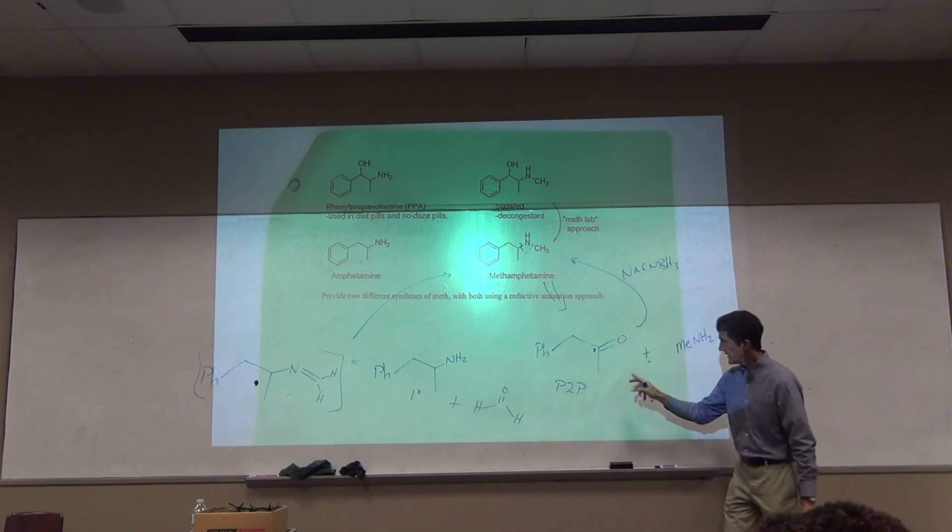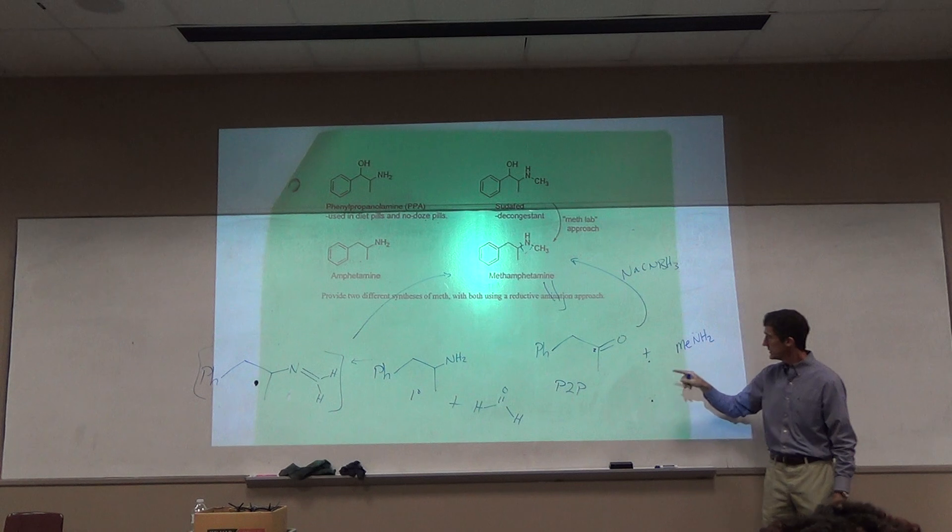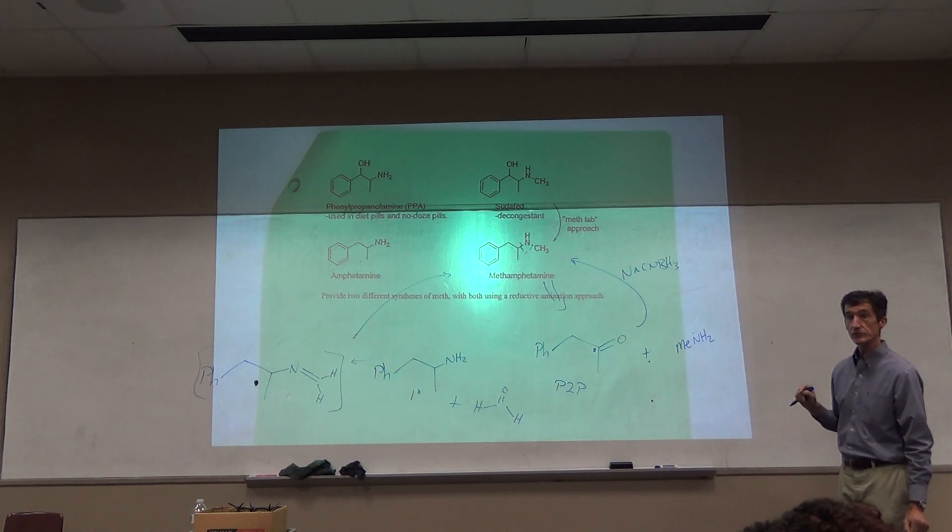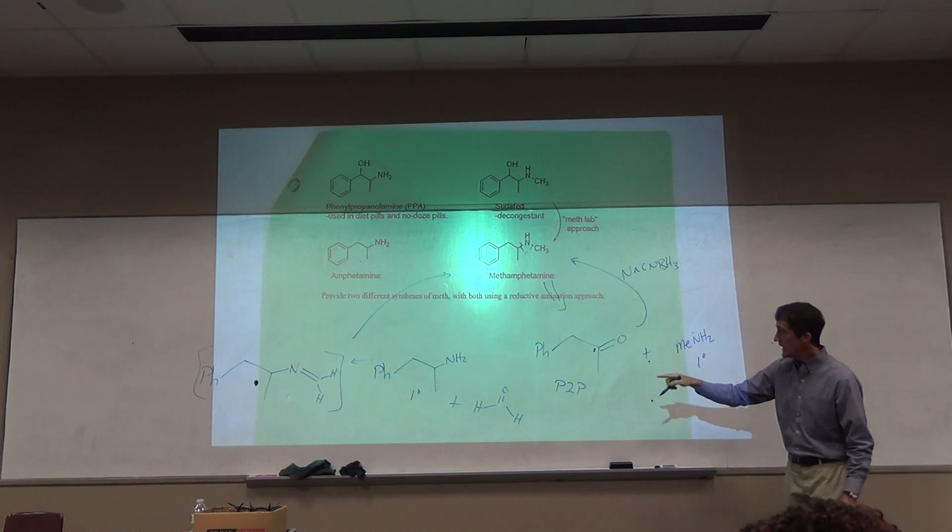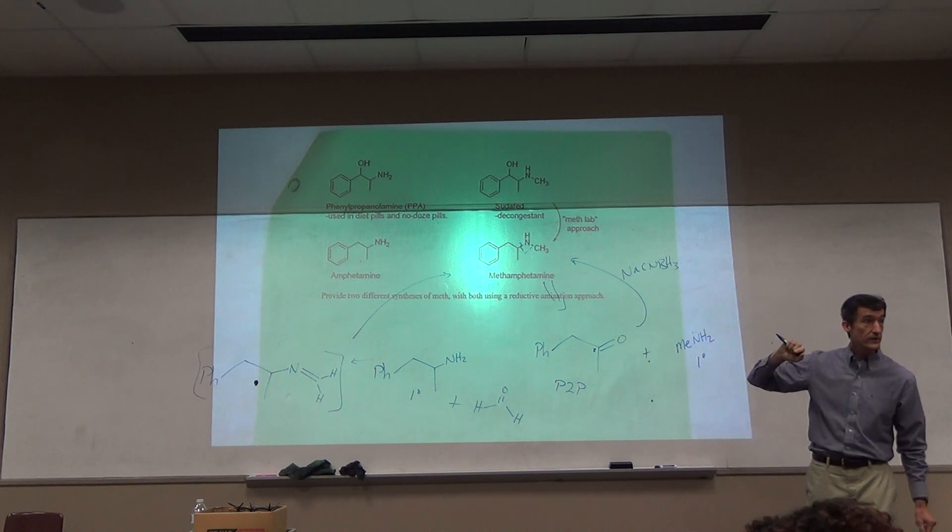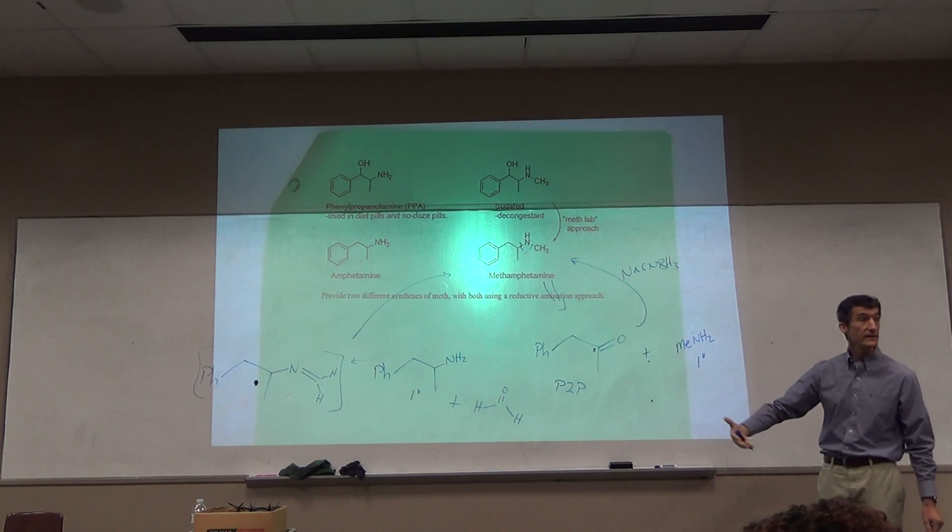Or the P2P method approach, the ketone using just methyl amine as the starting amine. Of course, this is also primary, too. And in both cases, the primary amines are becoming secondary amines. And so in that regard, the amine is being alkylated by an indirect approach.